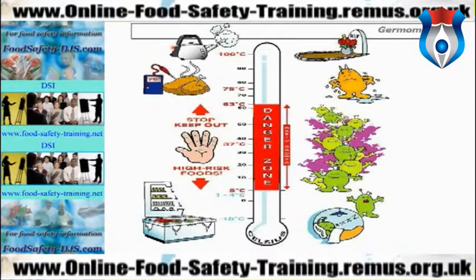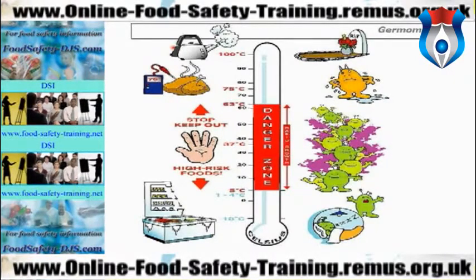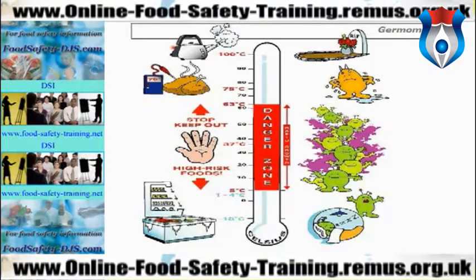As the temperature increases, bacteria will start to rapidly multiply up to the optimum temperature of 37 degrees Celsius — which is body temperature — where bacteria multiply every 10 to 20 minutes. As the temperature increases further, between 50 to 55 degrees Celsius, it gets too hot for bacteria and they start to die off. Most bacteria are killed between 60 to 63 degrees Celsius, but the important temperature to remember is the cooking temperature: 75 degrees Celsius.